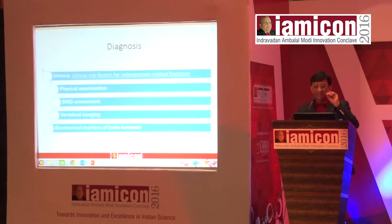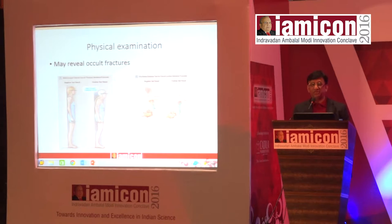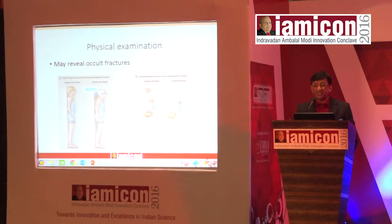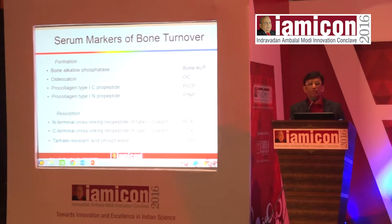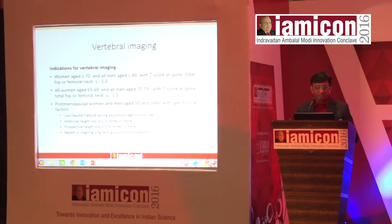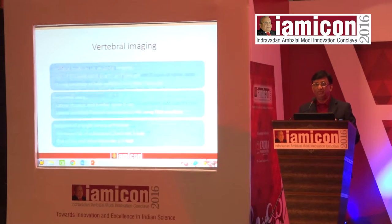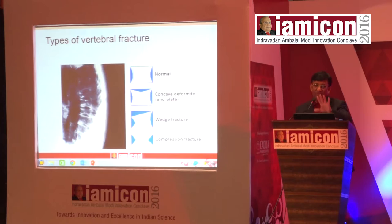How do you diagnose osteoporosis? By history — pain in the bone, deformity, and repeated fractures. Physical examination and BMD assessment. Loss of height of even 0.5–1 centimeter is the first symptom — it is easy to measure against the wall. Serum markers are available to know bone turnover but are costly. Vertebral imaging by X-ray is possible, but the best way to diagnose is BMD. The best technique is DEXA — dual X-ray absorptiometry.